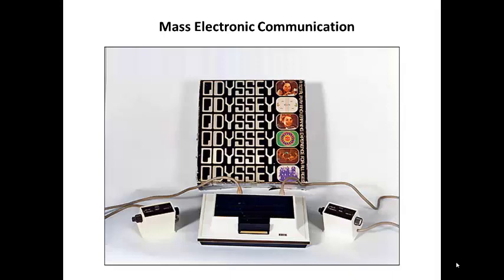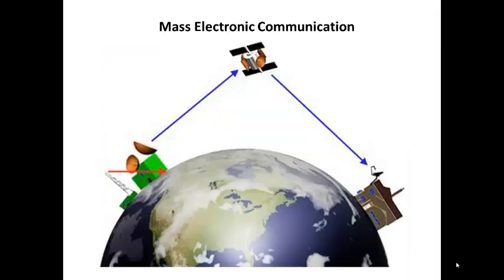In 1972, the Magnavox Odyssey was introduced as the first home video game console. Later consoles included Atari, Sega, Nintendo, Sony, and Microsoft. Video game consoles now also have internet compatibility and deliver streaming content such as Netflix, Hulu, or Amazon Prime. In 1975, cable pioneer HBO became the first television network to continuously deliver signals via satellite, 24 hours a day, 7 days a week. Eventually, satellite television — such as Dish and DirecTV — became major competitors of cable companies for TV content delivery.